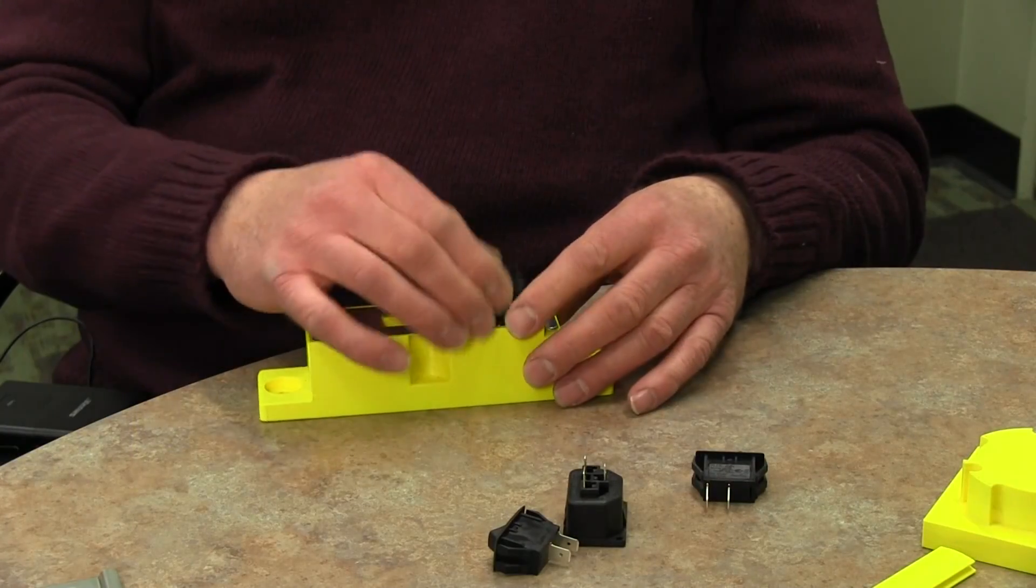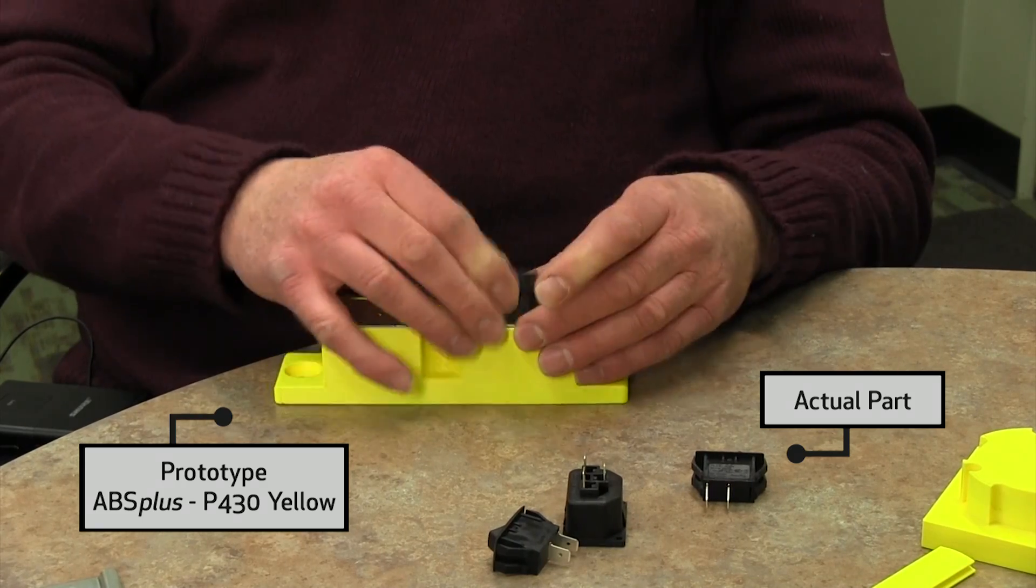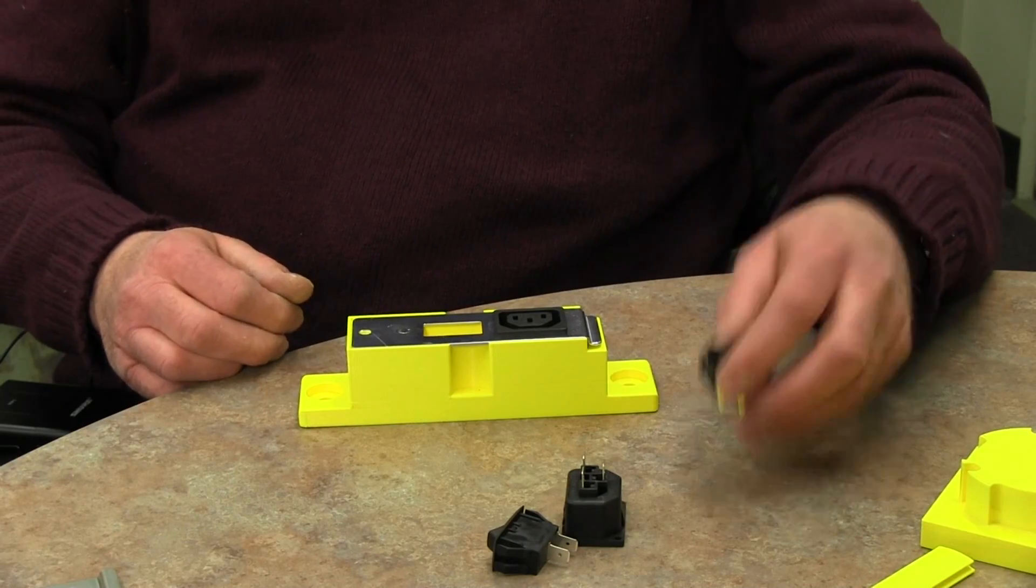It allows us to make fixtures very quickly and we don't have to think about running through our machine shop anymore. This is a switch assembly fixture—it's poka-yoke. The operator can only put the components in one way, and we're guaranteed they're going to be put together correctly every time.